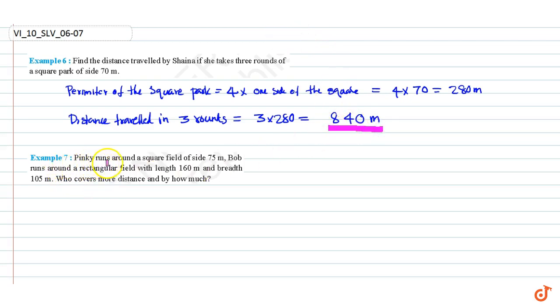Example 7: Pinky runs around a square field of side 75 meters, Bob runs around a rectangular field with length 160 meters and breadth 105 meters. Who covers more distance and by how much?